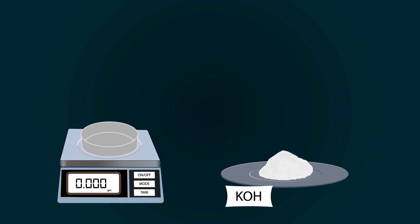Now start adding potassium hydroxide into the petri dish with the help of a spatula. Weigh precisely up to 10 grams.